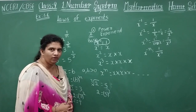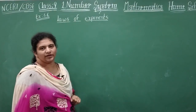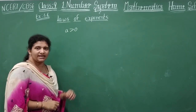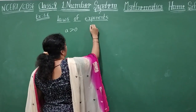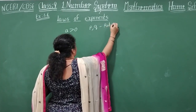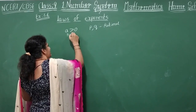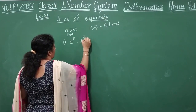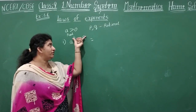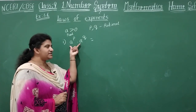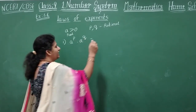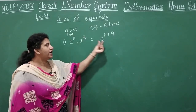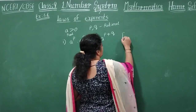Let's see the laws of exponents, where A is greater than 0 and A is a real number, and P and Q are any rational numbers. Then these laws will be applied. What is your first law? A power P into A power Q. When you have same bases and different exponents, take the base and add the powers.